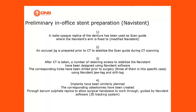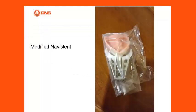Fourth, implants were similarly planned. The corresponding osteotomies were created through the barium sulfate replica to allow surgical navigation to work through, guided by the Navident software 3D tracking system. This resulted in the modified Navistent configuration.